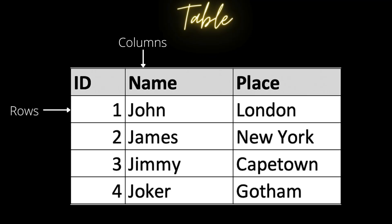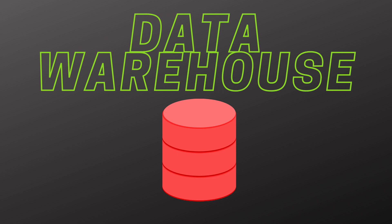A database is an organized collection of data. Usually we store data in the database in tabular form — that means we have tables, rows, and columns. A data warehouse, which is also called an enterprise data warehouse, is a system used to store data in a way that can be easily used for reporting. It is usually considered the core of any business intelligence system.